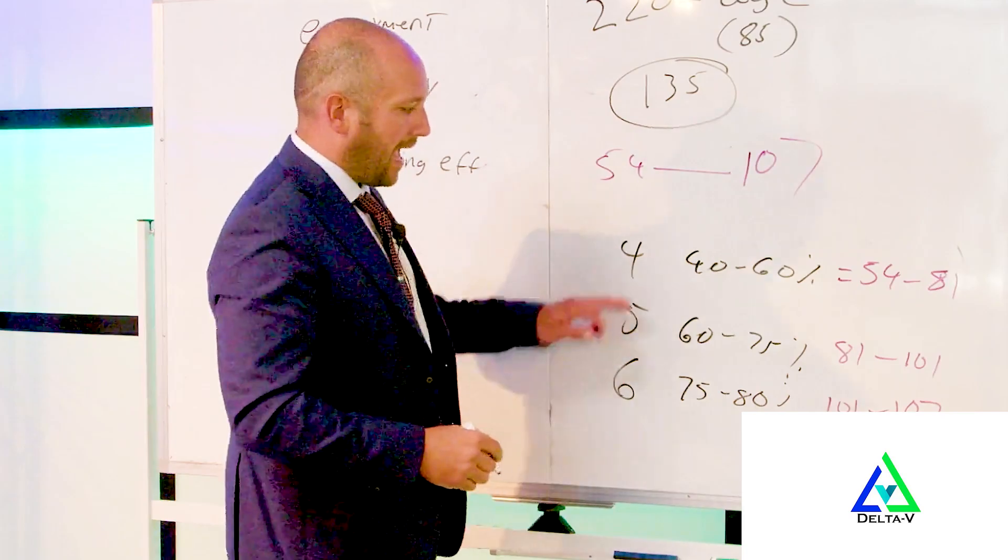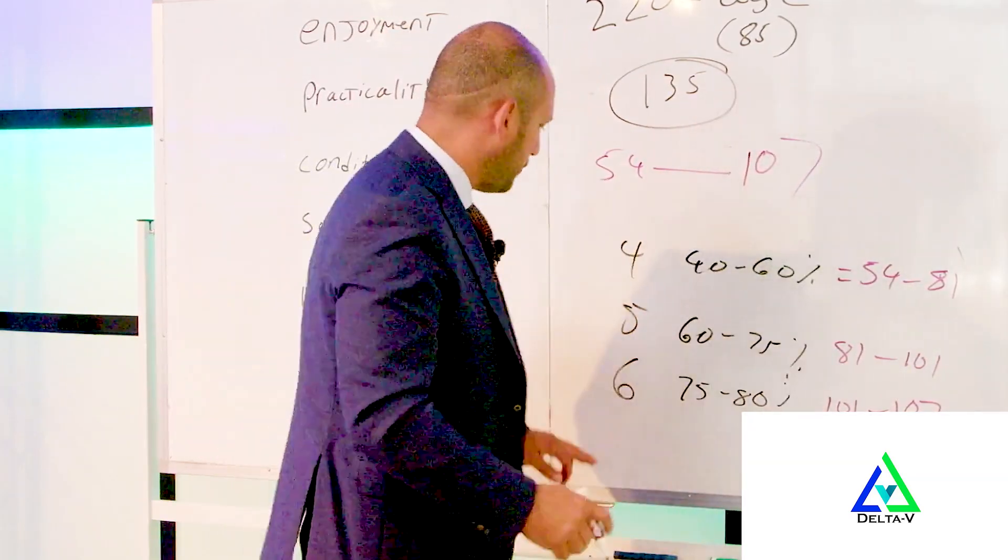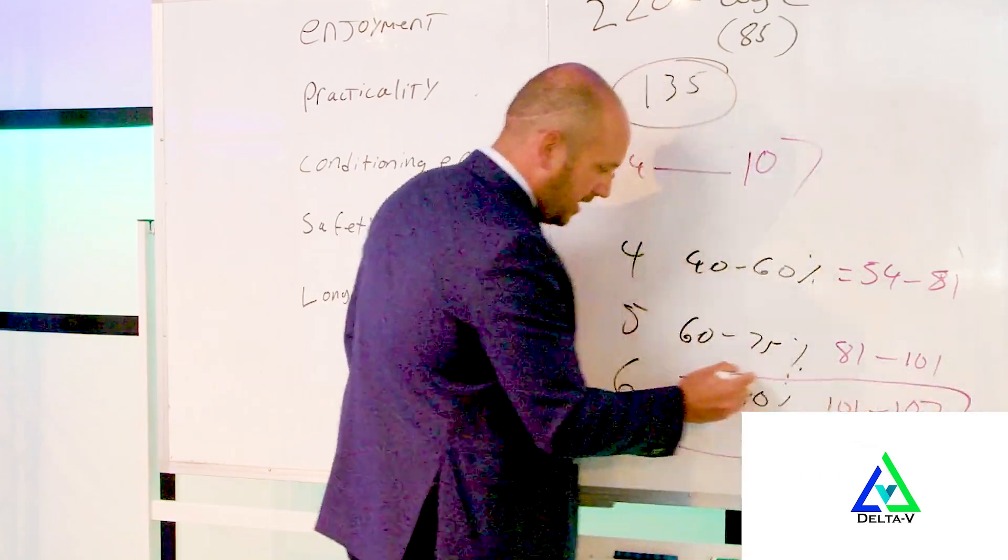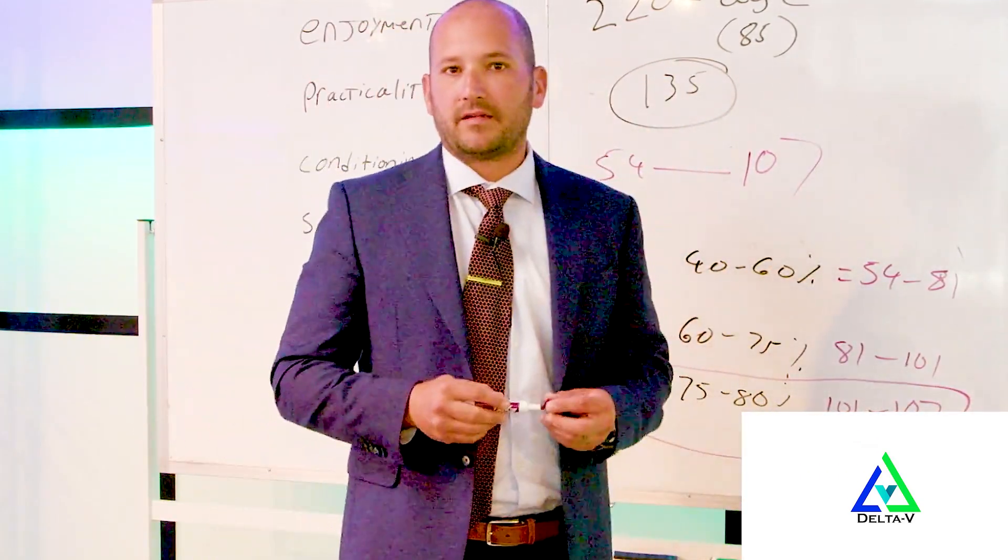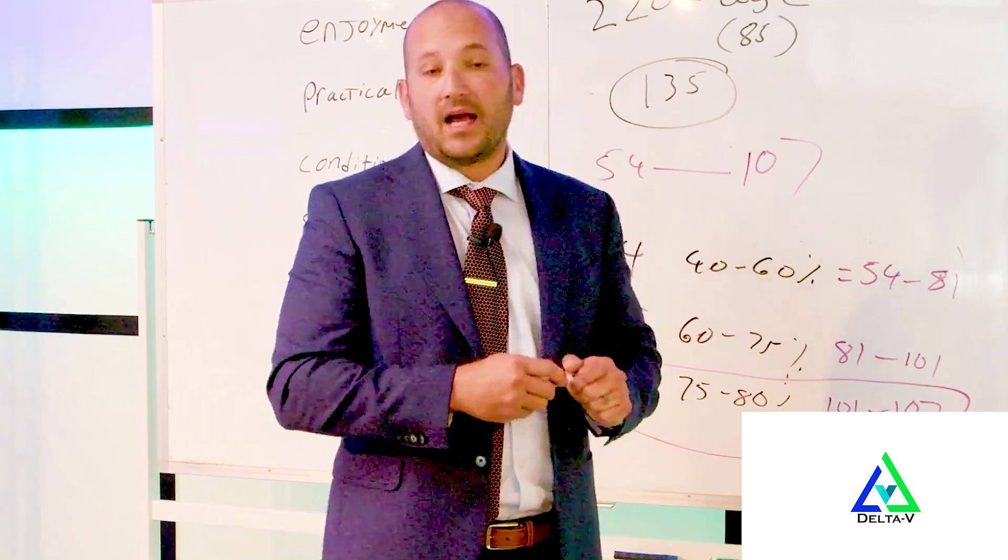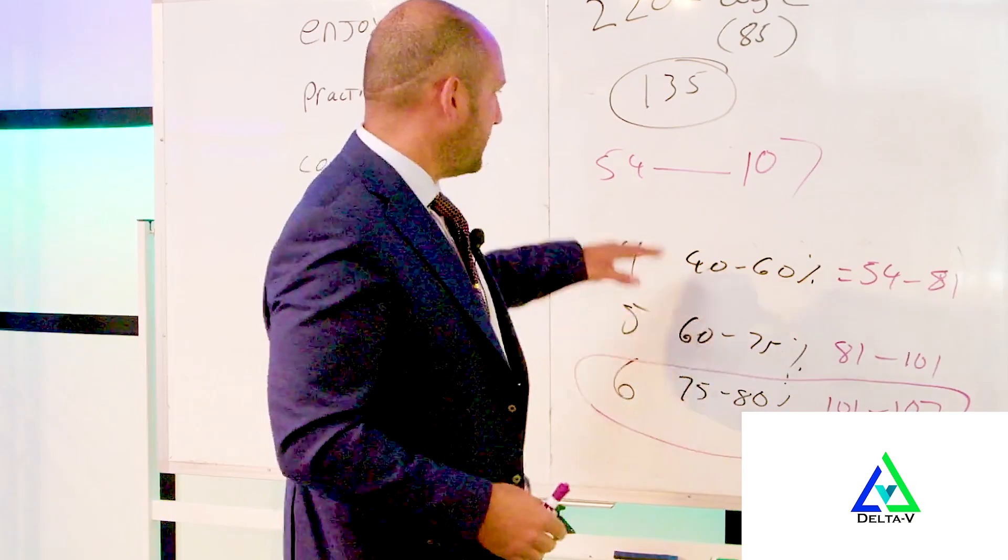Now where would an athlete work out? At 40 to 60% of the maximum heart rate? No, they would work out usually in this zone here, 75 to 80% of their maximum heart rate. Meaning the work of breathing is going to be very high, but still manageable. That's why we stay at 4, 5, and 6.